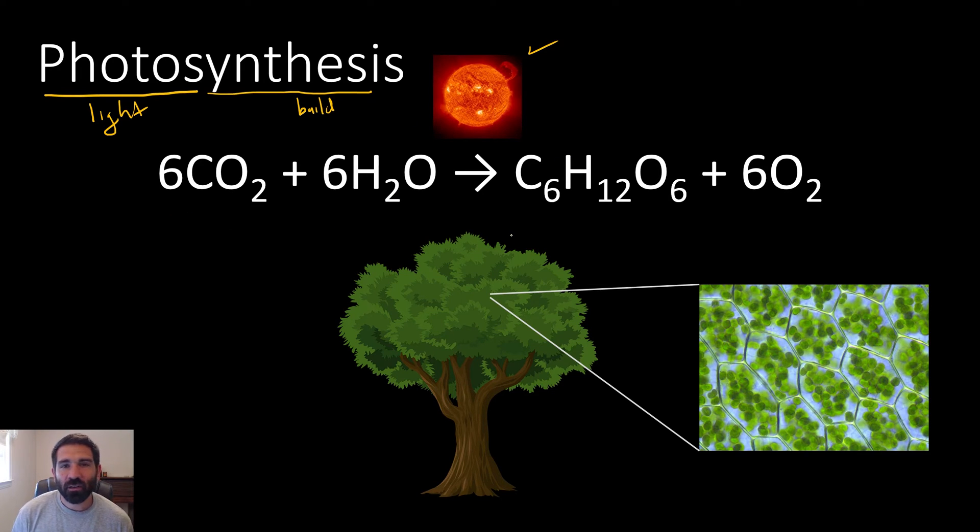The chemical reaction down here shouldn't be too scary to you. Let's start with the middle, which is this arrow. It means the things on this side are converted or changed into the things on that side. So these are the things over here that are needed. They're called the reactants. Let's take a look at them one at a time.